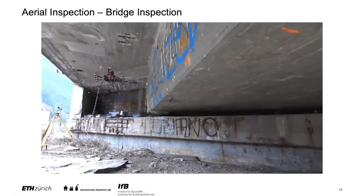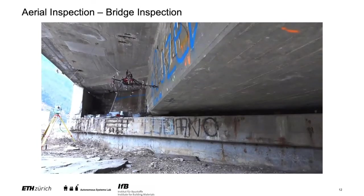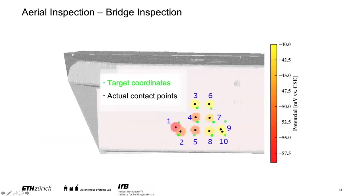In the time-lapse, we fly along given grid points on the bridge to take measurements, and afterward we get a visual representation of how corroded the bridge is at each point. The green points are where we wanted to touch and the black points are slightly off — we didn't exactly reach every point, but we stayed in contact long enough at each to get sufficient measurements. This shows the approach can be used for inspection tasks outside in unknown, less structured environments.